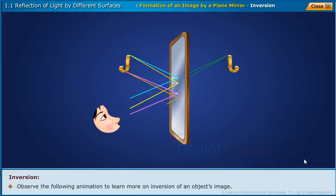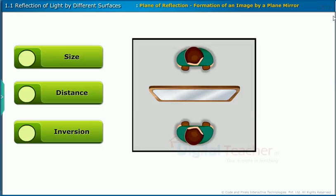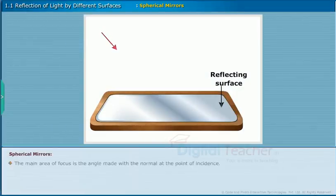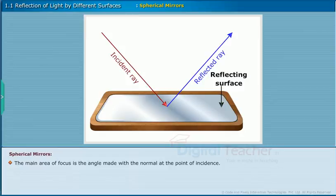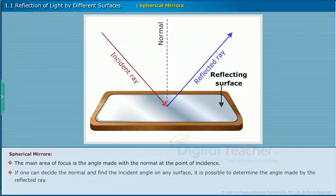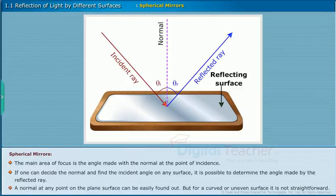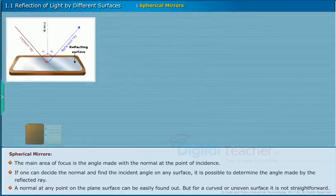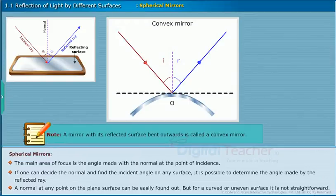After learning about reflection of an object from a plane mirror, let us now learn about reflection of objects from curved surfaces. Spherical mirrors: the main focus is the angle made with the normal at the point of incidence. If one can determine the normal and find the incident angle of any surface, it is possible to determine the angle made by the reflected ray. For a curved or uneven surface, finding the normal is not straightforward. A mirror with its reflected surface bent inwards is called a concave mirror.